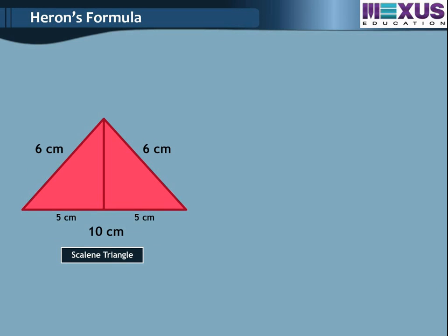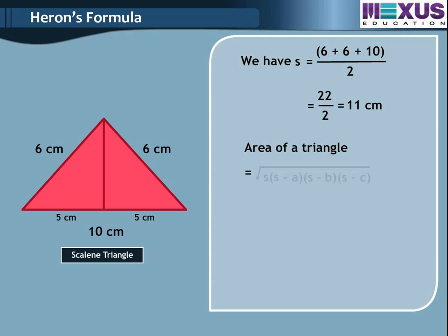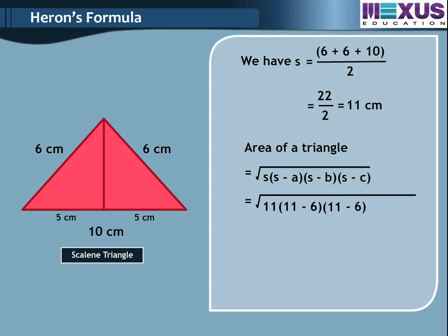For the isosceles triangle, S equals (6 plus 6 plus 10) divided by 2, giving 11 cm. Area of triangle equals square root of 11 into (11 minus 6) into (11 minus 6) into (11 minus 10), equals square root of 11 into 5 into 5 into 1, equals square root of 275, which equals 5 root 11 cm square.